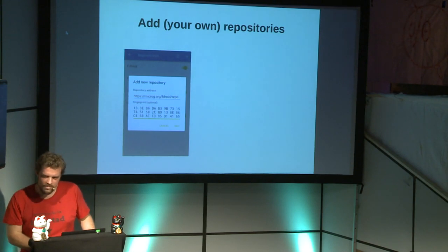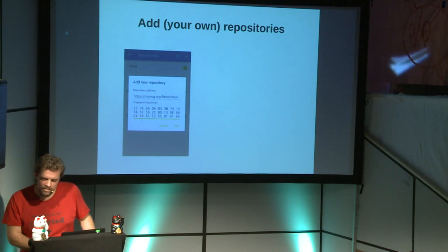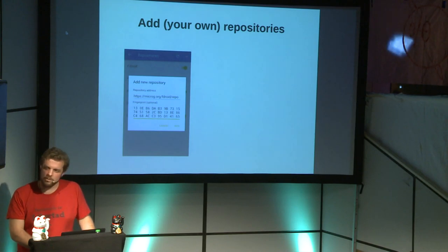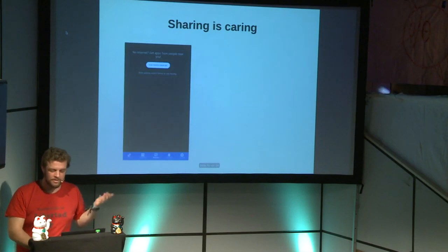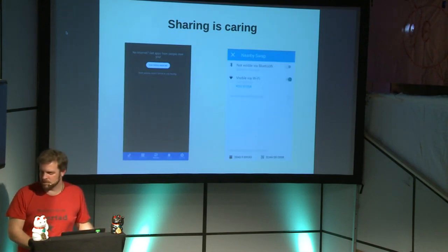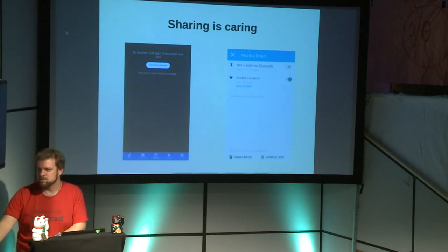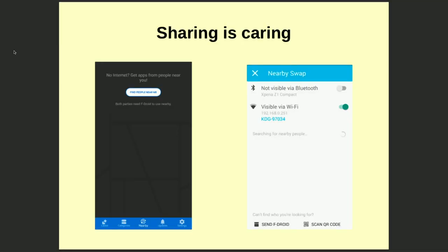For custom repositories the other person first has to add the repository, which requires some internet. But if you have a cap on bandwidth, adding a repository and then getting the binary from a friend is not the same cost as downloading everything from the internet directly. You can save bandwidth that way. But the main powerful feature is really sharing software from one device to another without needing any internet or even Wi-Fi — with Bluetooth technology you can just swap software to the next device.